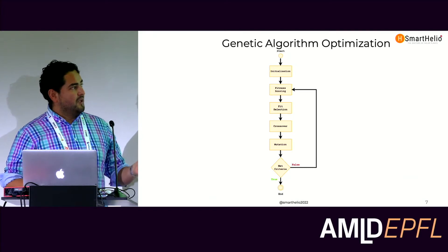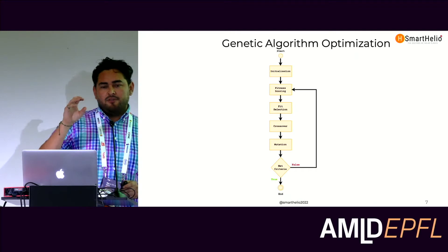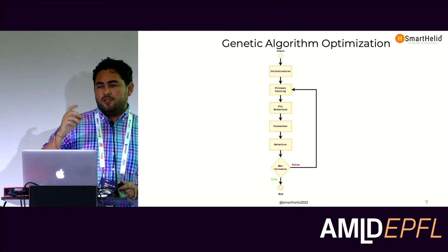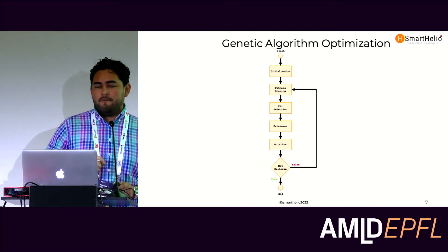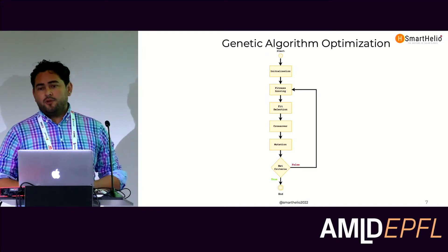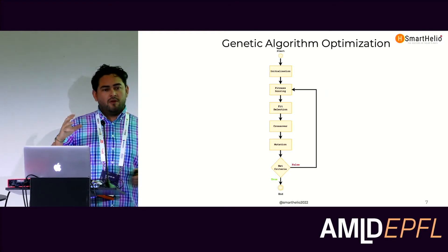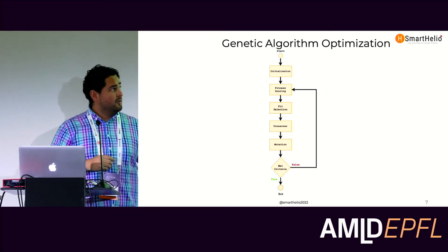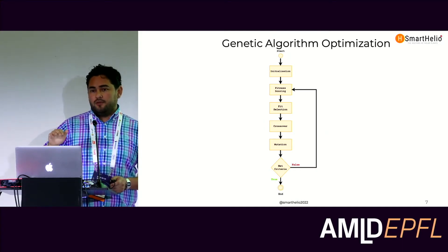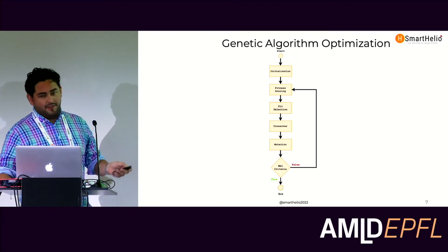Then you have mutation, where you take one member of the population and change some of its characteristics by a mutation percentage. These last two steps — crossover and mutation — help a lot when you have a problem with many local minima, since we are targeting the global minimum. These two steps help jump over local minima to reach the global minimum. The process ends when you meet the stopping criteria.